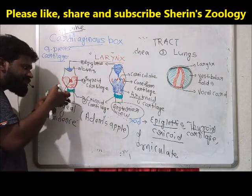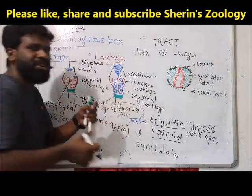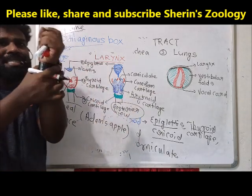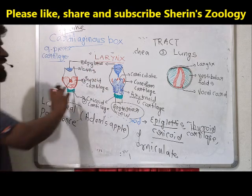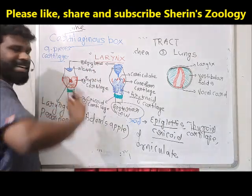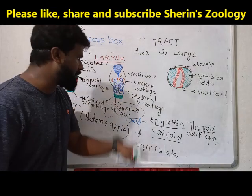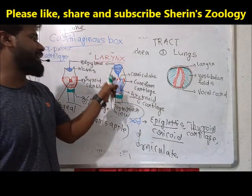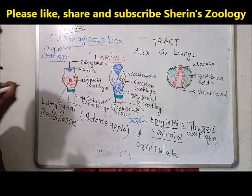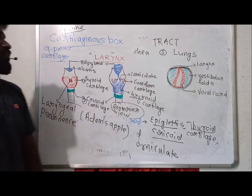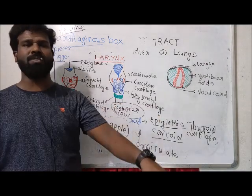The cricoid cartilage is a ring of cartilage at the base of the larynx, and can be seen in both the anterior and posterior views. The paired cartilages — arytenoid, cuneiform, and corniculate — are seen in the posterior surface. So these are the cartilages of the larynx.